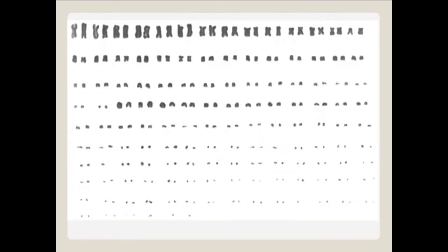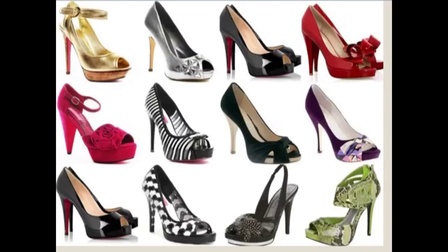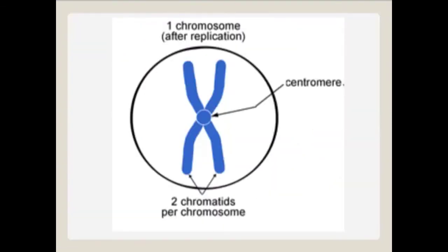That's 92 sisters in all. Now that's a lot of shoes. The sister chromatids are attached together in a spot called the centromere. Imagine being attached to your sister.